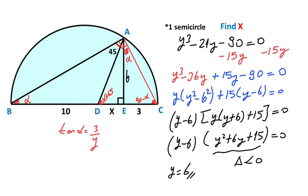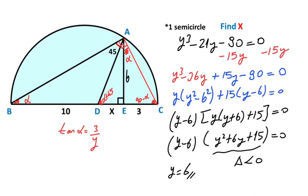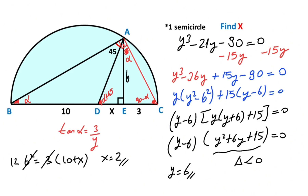Then for triangle ABC, if we apply the geometric mean theorem we get the value of x. So 6 squared equals 3 times (10 plus x). Simplifying: 36 = 30 + 3x, therefore x is going to be 2 units. Thanks for watching. If you want more videos like this, please don't forget to like and subscribe to my channel. Take care and bye bye.